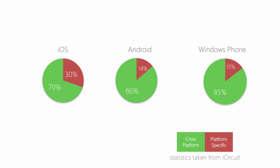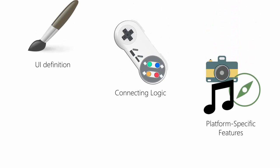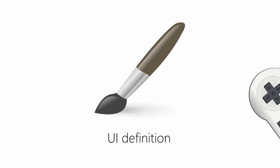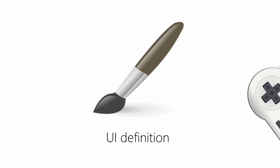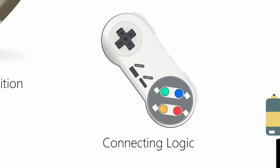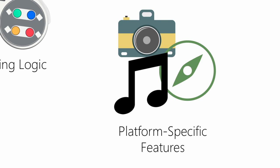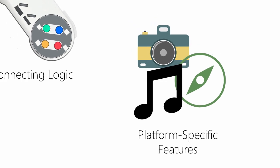The first thing to remember is that we'll always have some platform-specific code, even if it's just the host or head project used in Xamarin Forms. Here on this slide, we have a real example of some statistics taken from a published application written with Xamarin. The platform-specific code is shown here in red. On average, there will be anywhere from 15% to 30% of our project that's going to be platform-specific. This often includes the UI definition, particularly if you're not using Xamarin Forms, controller code to get from the UI into our core logic, and then any platform-specific services that are necessary to run our application.